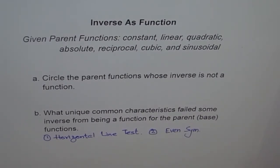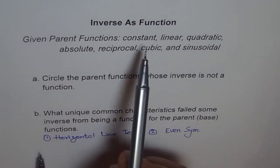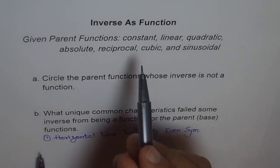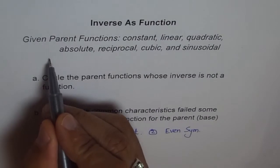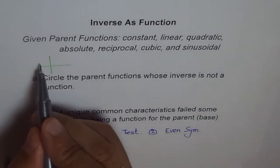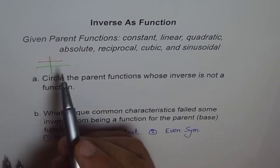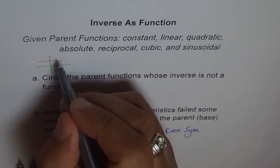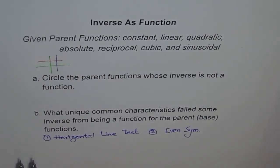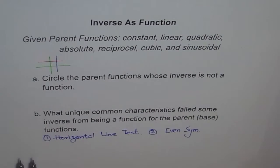Now let's look into these parent functions and see which ones have even symmetry and which ones fail the horizontal line test. The constant function is basically a horizontal line, so when you find its inverse it becomes a vertical line, which fails the vertical line test. It also fails the horizontal line test because a horizontal line overlaps entirely. So we circle the constant function — its inverse is not a function.